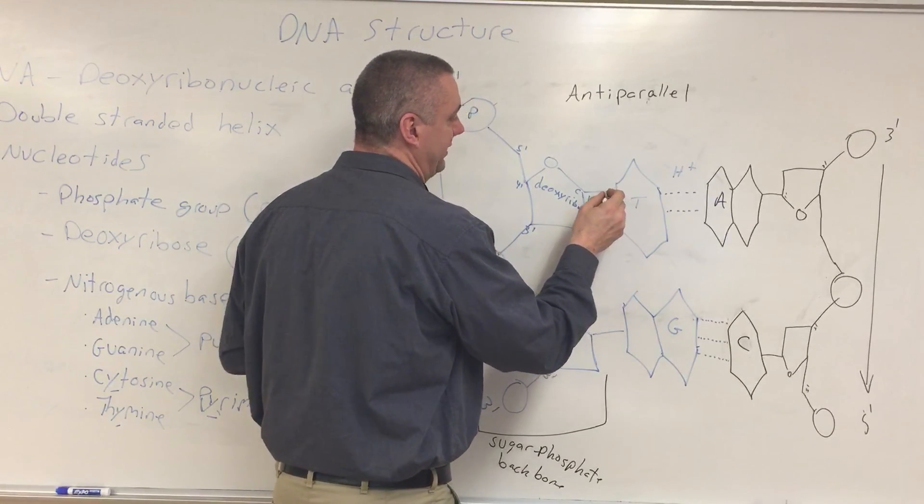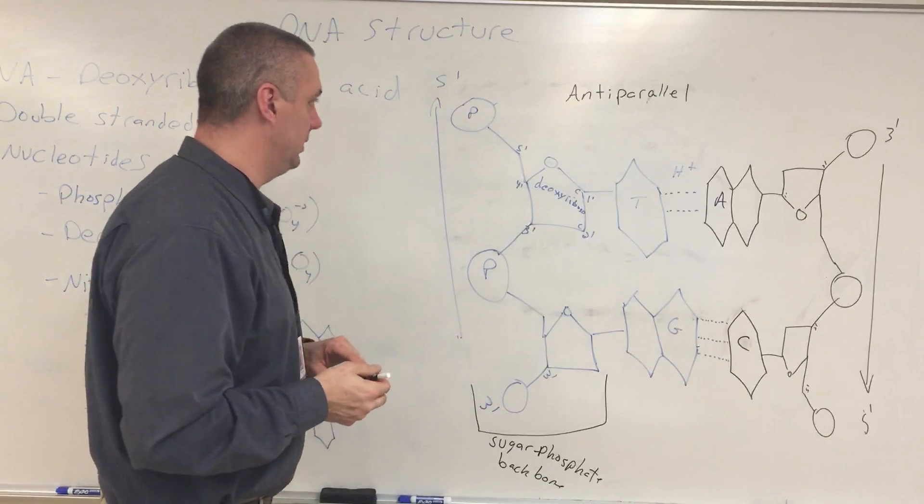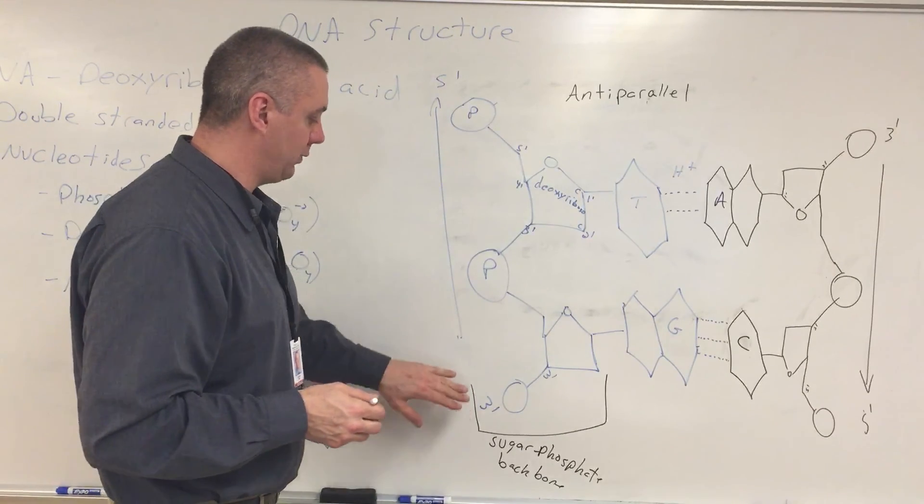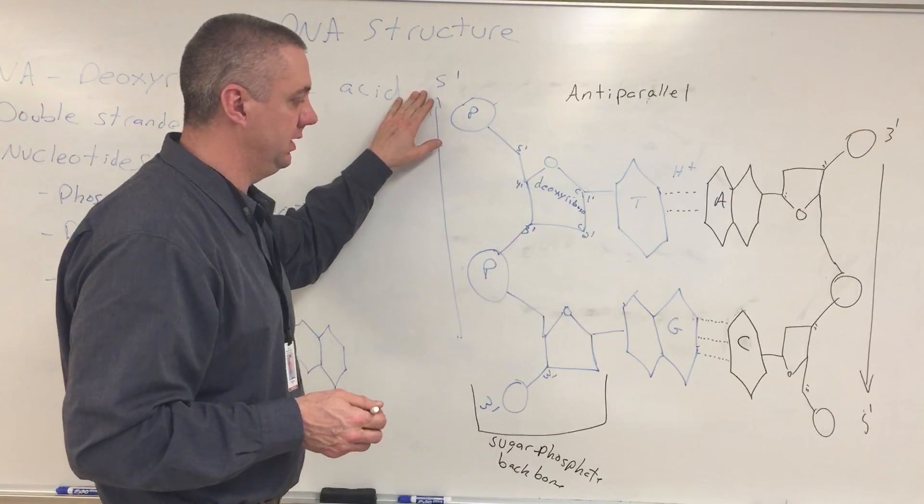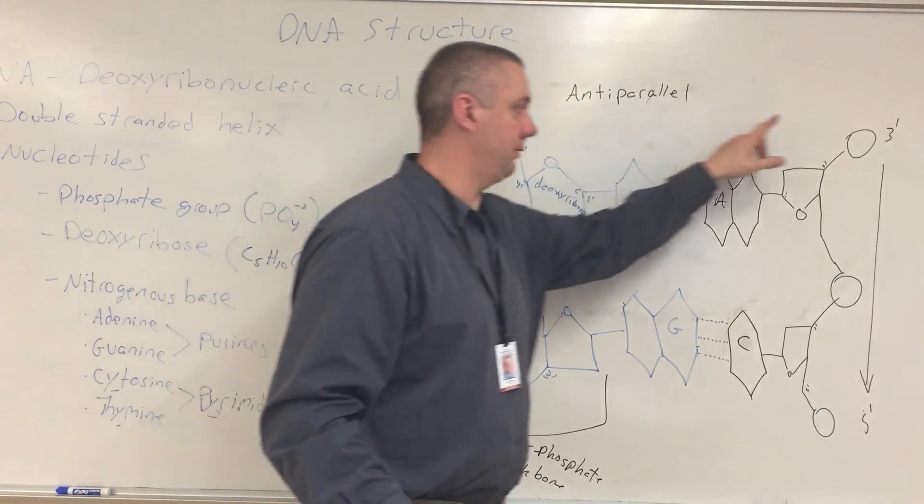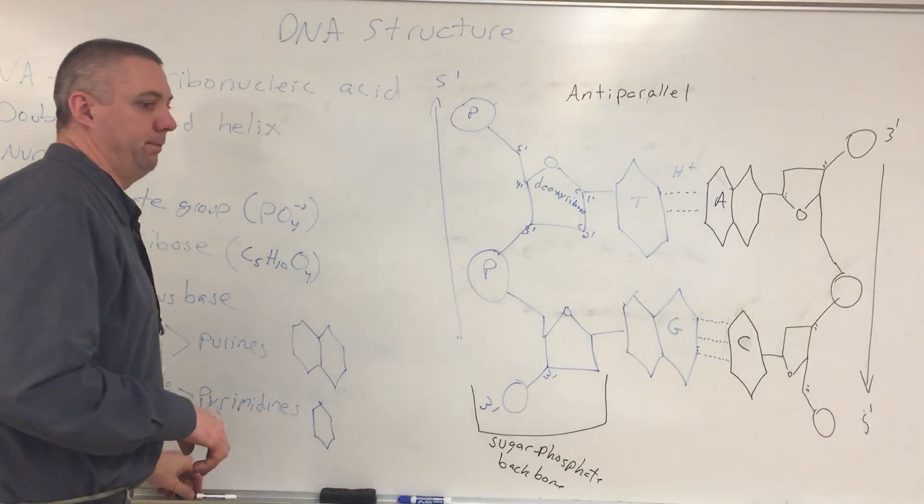The nitrogenous bases are always attached to the deoxyribose at the one prime, and they're anti-parallel because one runs three prime to five prime, bottom to top, and the other one runs three prime to five prime, top to bottom. Got it.